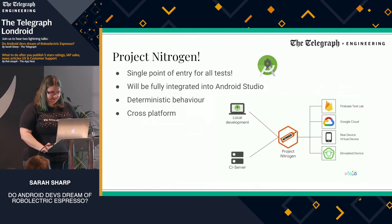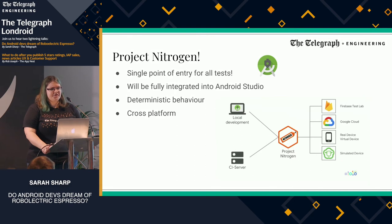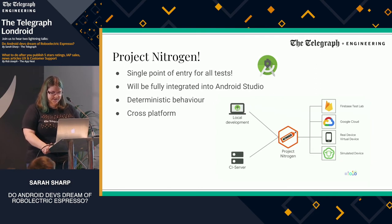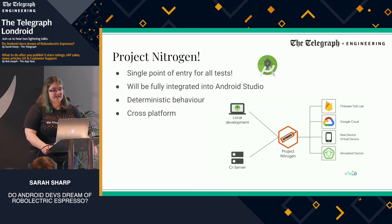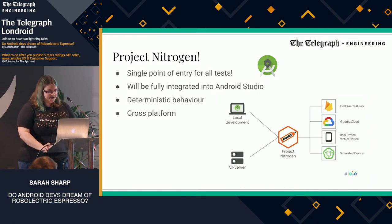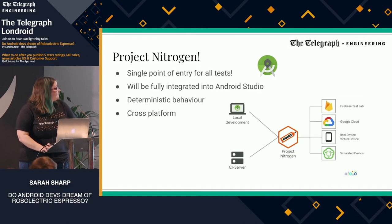The next thing on that general journey is the Project Nitrogen stuff. Going from this idea of unifying the test APIs into one super test API where you can run everything with the same language, we have the introduction of Project Nitrogen, which allows us — once we build those tests — to then deploy them on different environments. Rather than when you're locally developing trying to deploy on Firebase Test Lab from your IDE or in Roboelectric while your CI server might be doing the same thing in a slightly different way, Project Nitrogen is in the process of being introduced to centralize this and take that complexity away. It will be fully integrated into Android Studio.